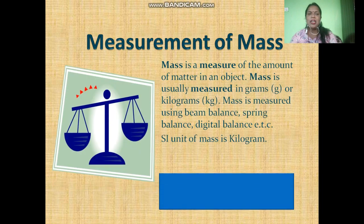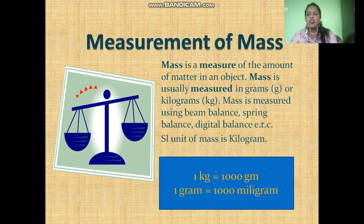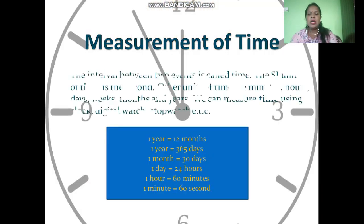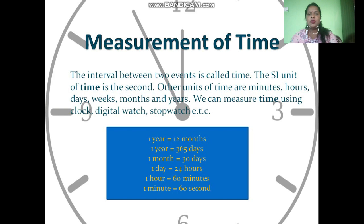Measurement of mass — the amount of matter contained in a body is called mass. Mass is a measure of the amount of matter in an object. Mass is usually measured in gram or kilogram, using a beam balance, spring balance, or digital balance. The SI unit of mass is kilogram.